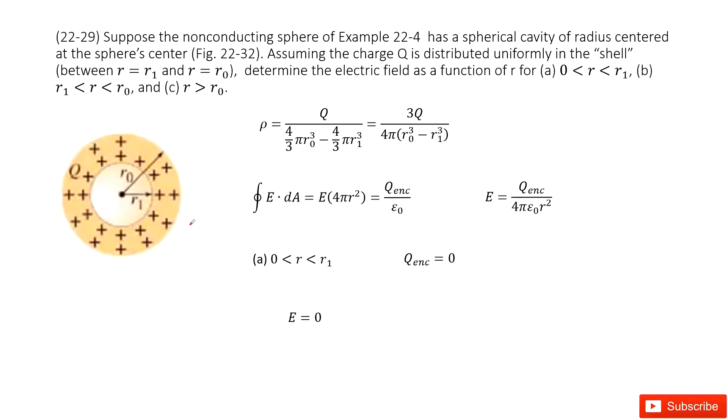Chapter 22 is about Gauss's law. In this system, we have a non-conducting spherical object. The keyword is non-conducting. That means the charges were uniformly distributed on it.